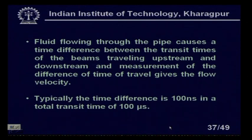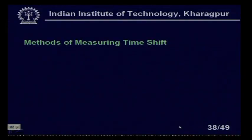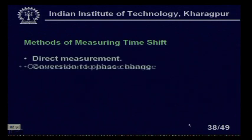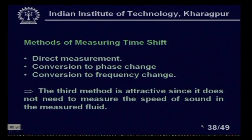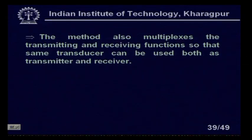Typically, the time difference is 100 nanoseconds in a total transit time of 100 microseconds. The accuracy of the measurement boils down to accurately measuring this 100 ns time difference. Methods for measuring the time shift include: direct measurement, conversion to a phase change, and conversion to a frequency change. The frequency change method is most attractive since it does not require knowing the speed of sound in the measured fluid.